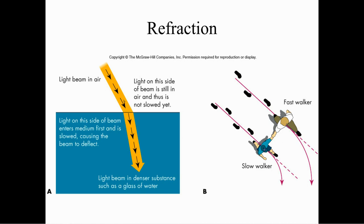A light beam in the air coming down hits an object and slows — this part will slow down before that part. It's like two people holding onto each other going around a corner: one person has more distance to cover and must move faster. Light on the side of the beam still in the air is not slowed down yet. Light on the other side enters the medium first, is slowed, and the beam is deflected — causing it to refract.